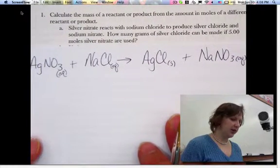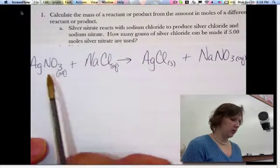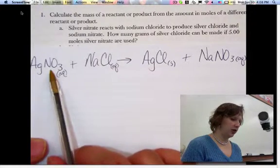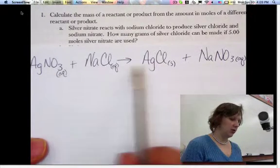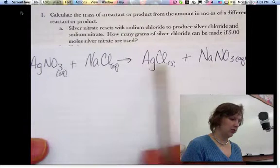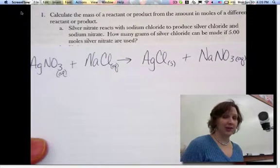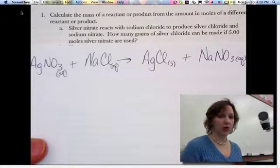Is the equation balanced? 1 silver, 1 silver, 1 nitrate, 1 nitrate, 1 sodium, 1 sodium, 1 chlorine, 1 chlorine. This is really easy math because all of these are going to be 1 to 1 mole ratios.